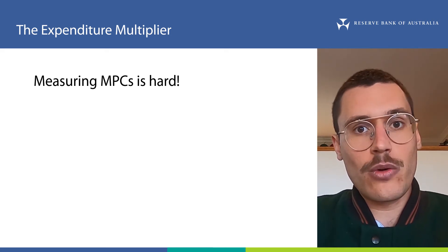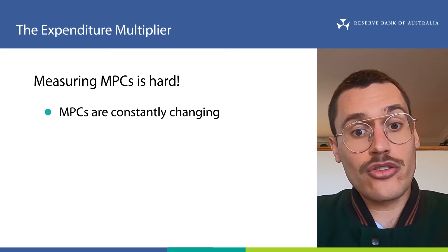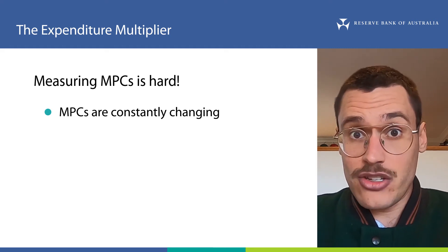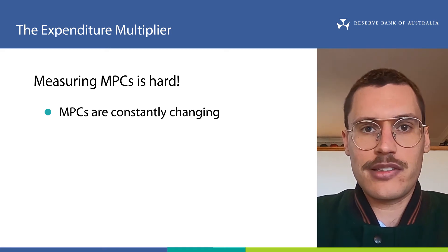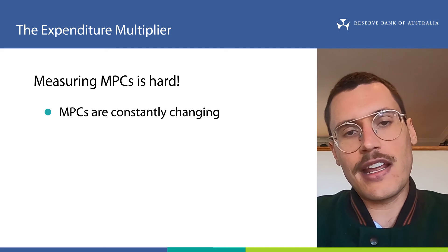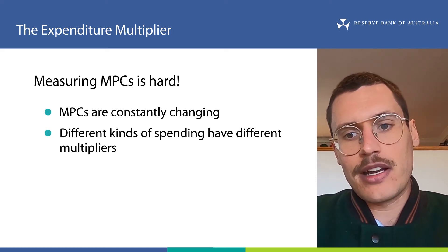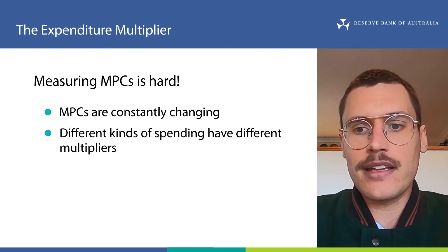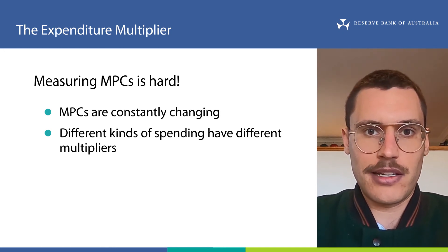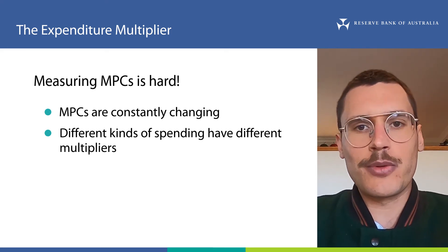However, I want you to be aware that in the real world, measuring MPCs can be quite hard. The first issue is that MPCs change all the time, depending on your circumstances and also where you receive the money from. For example, you probably don't save the same amount of every paycheck that you receive. Also, you might be more willing to spend money received as a gift or a prize, as opposed to your wages. This makes it hard to know what your actual MPC would be for the next dollar that you receive. The second issue is that different kinds of spending have different multipliers. Money provided to businesses, households, and governments will be spent in different ways, and this means that the different components of GDP — consumption, investment, government spending, and net exports — will have different multipliers. So the simple multiplier is a useful way to think about how changes in spending affect GDP, but in the real world, measuring multipliers can be a bit difficult.